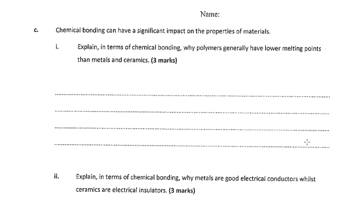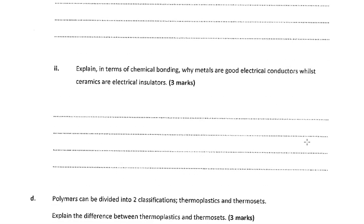Explain in terms of chemical bonding why metals are good conductors, while ceramics are electrical insulators. This is a great question. Because metals have free electrons, they are surrounded by a cloud of free electrons, those electrons are able to conduct both electricity and heat. Whereas ceramics typically are made of covalent and ionic bonds, and they don't have any free electrons. The ions in ionic bonds can carry charge. However, they are not free to move in their lattice, and therefore can't conduct electricity. I think it's a really good question.